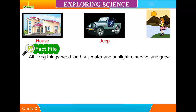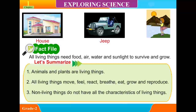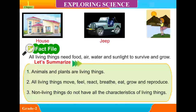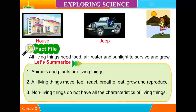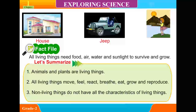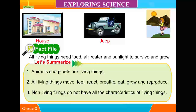All living things need food, air, water and sunlight to survive and grow. Let's summarize: 1. Animals and plants are living things. 2. All living things move, feel, react, breathe, eat, grow and reproduce. 3. Non-living things do not have all the characteristics of living things.